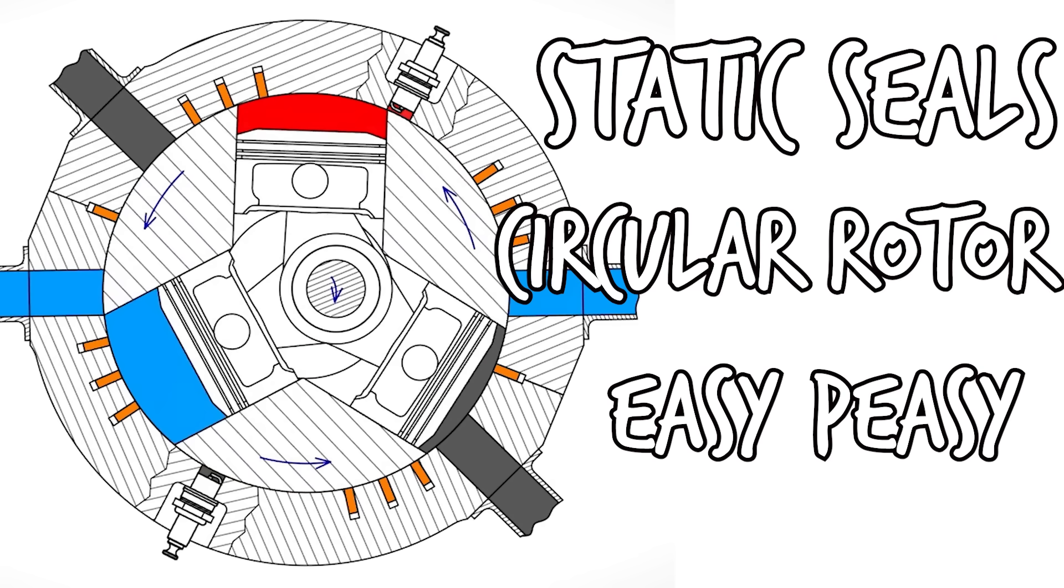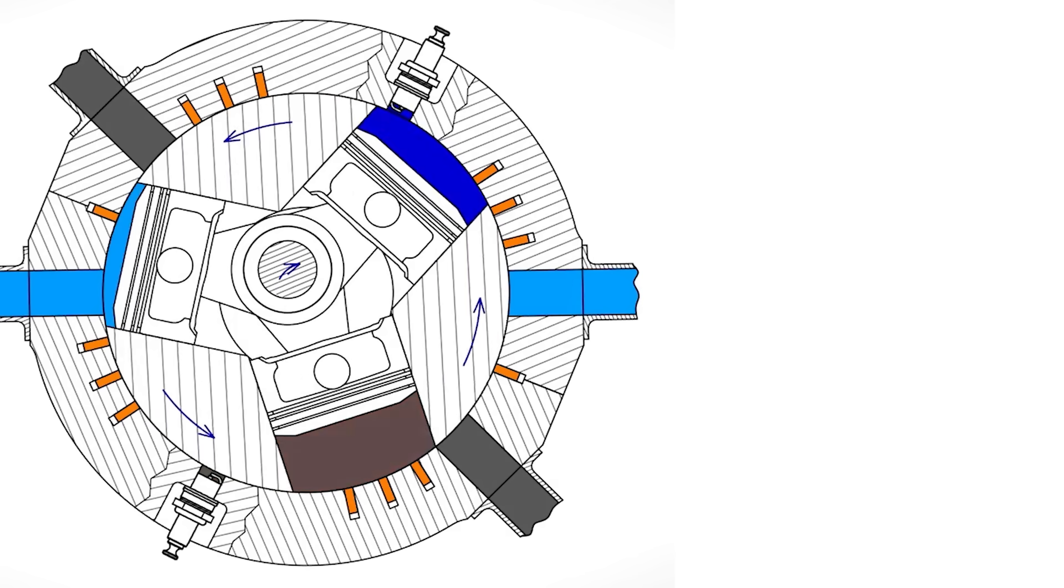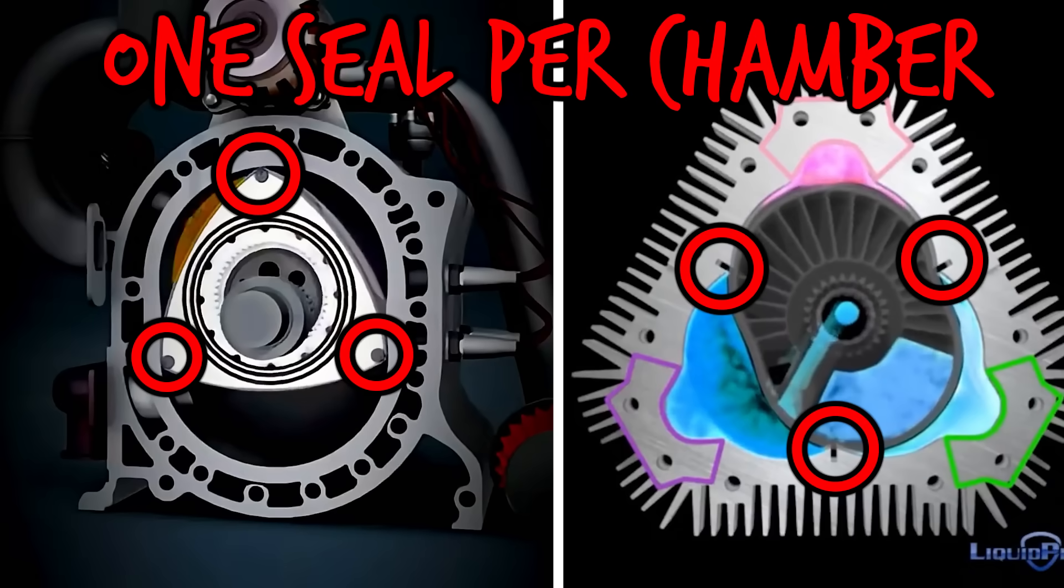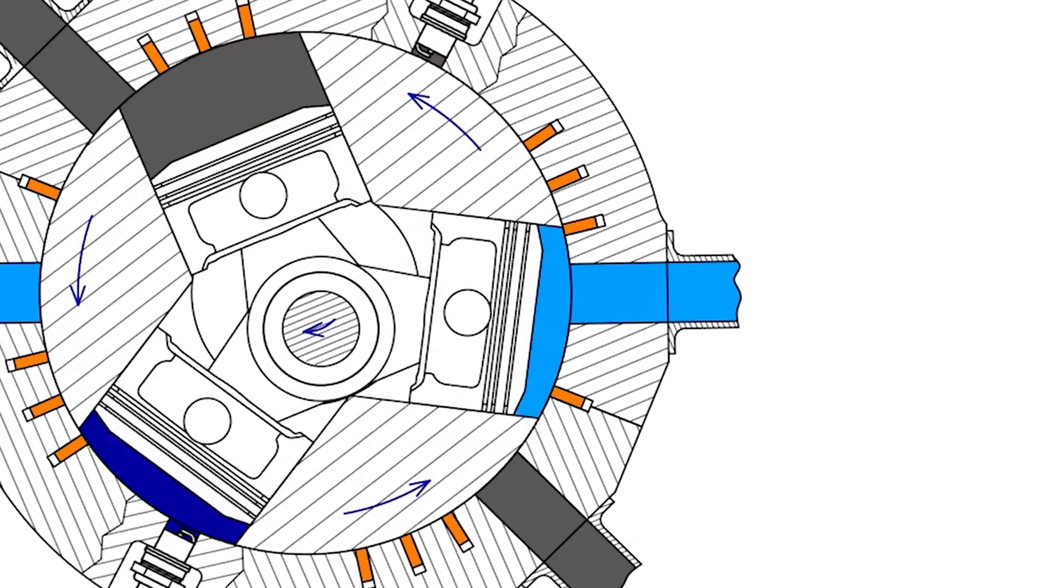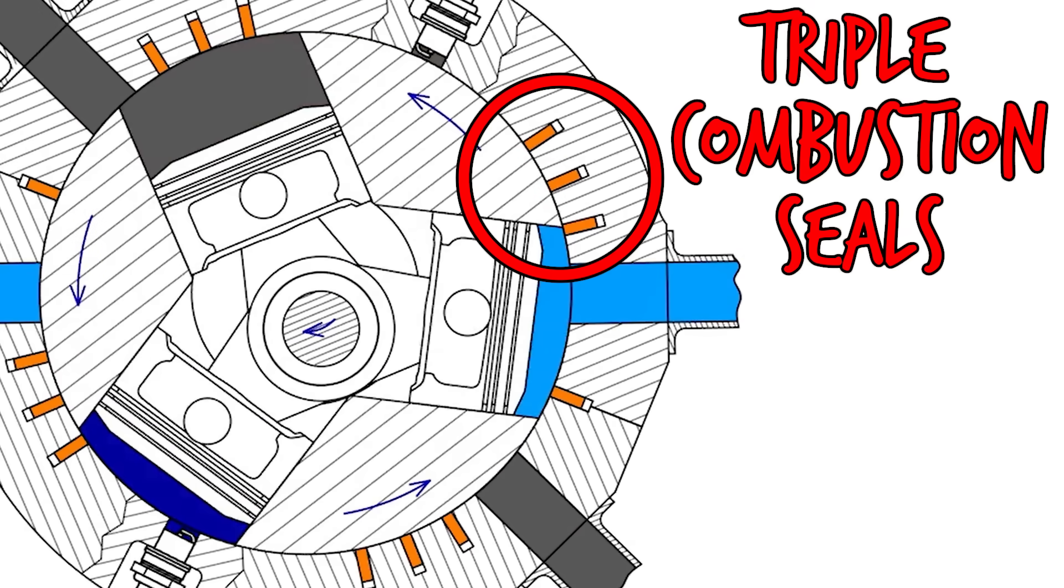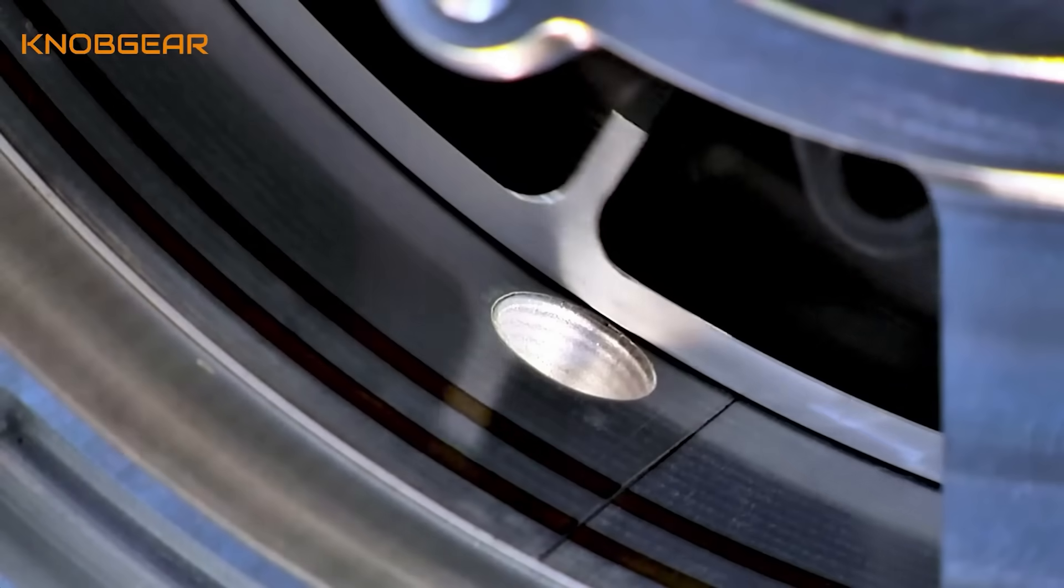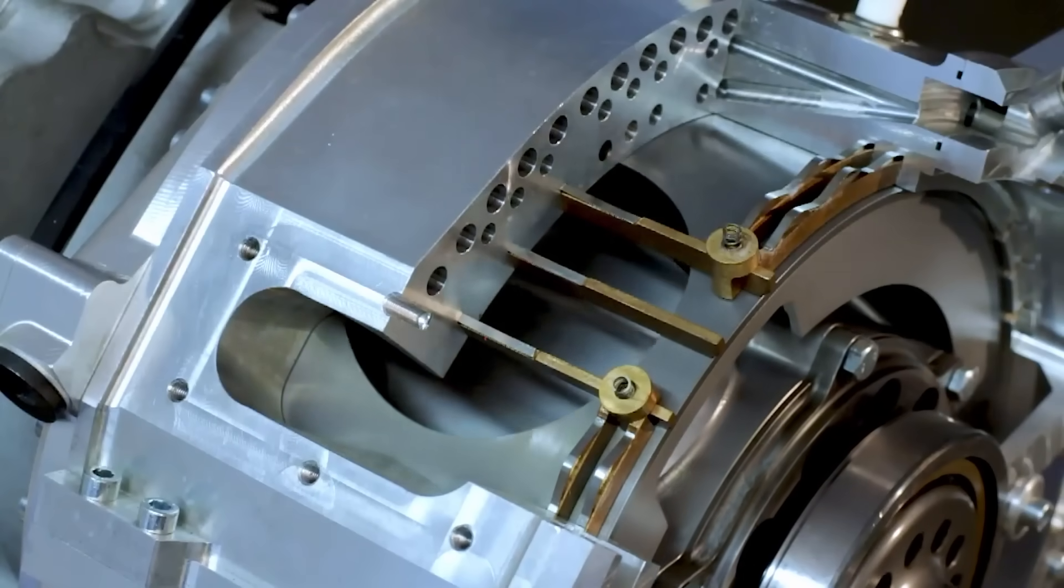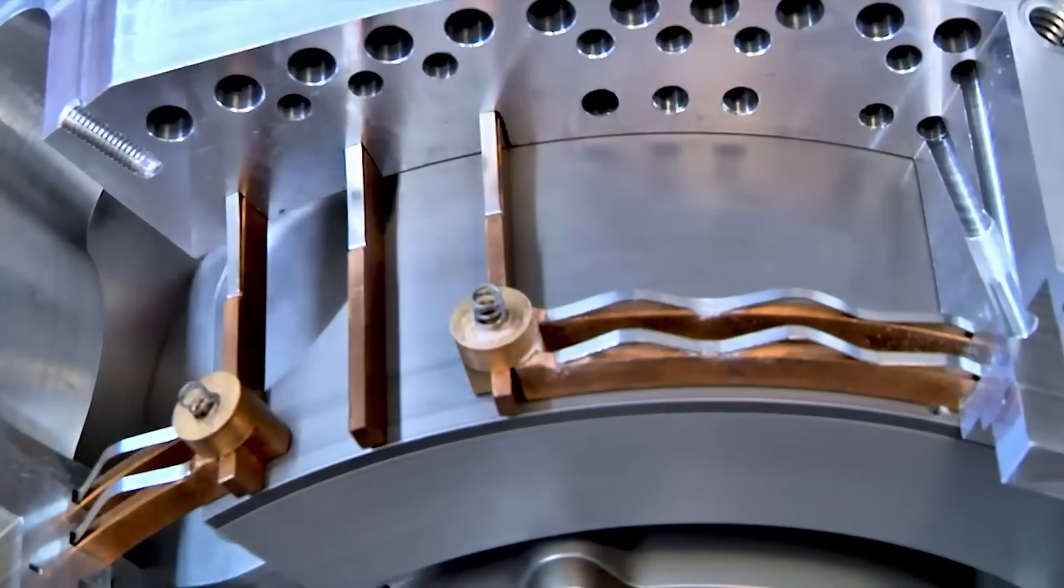But the perfectly circular rotor enables one more sealing advantage, and that's an increased number of seals. Both the Wankel and the liquid piston can only afford one seal per chamber. But not the bi-rotary. It can stack seals. And as you can see, we have three seals on each side of the combustion chamber and one seal preventing exhaust gases from entering into the intake. We also have double face seals. All of this means that a bi-rotary engine should have much less blow-by and noticeably improved emissions compared to both a Wankel and a liquid piston engine.